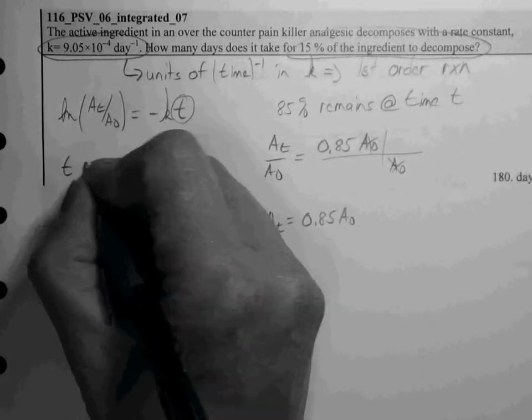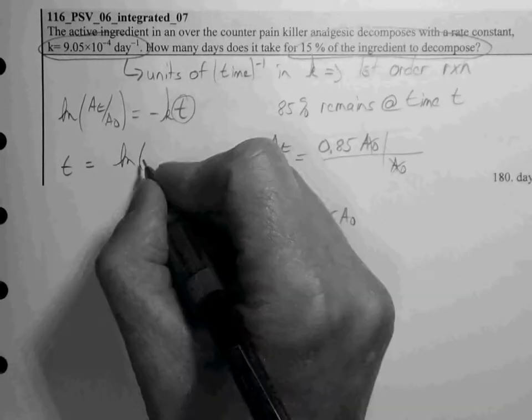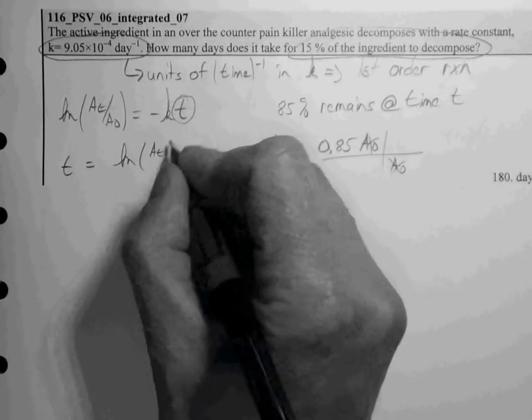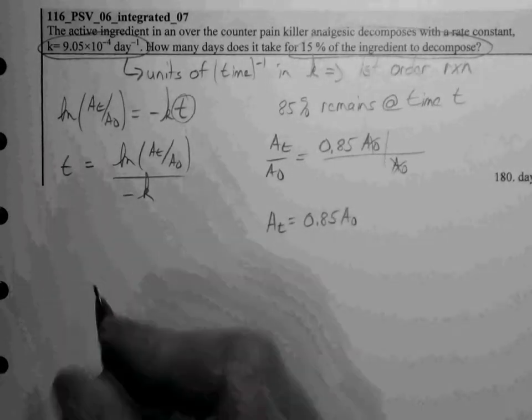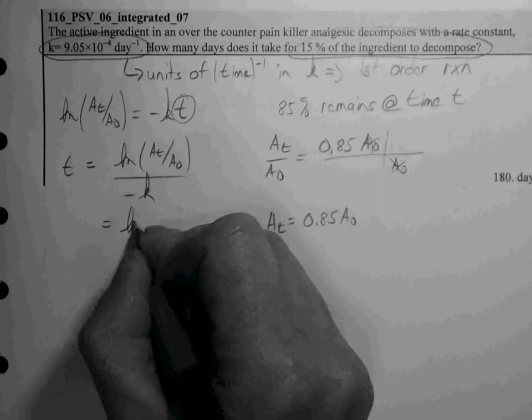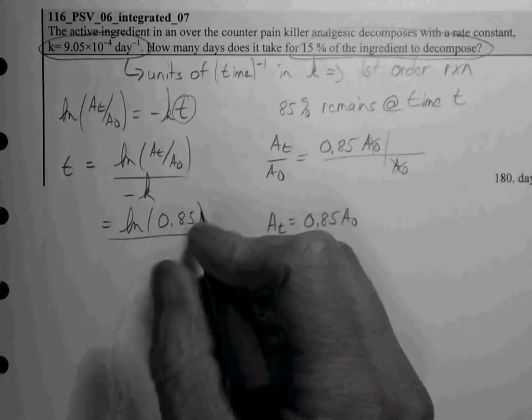So we can solve for T and substitute in our values and K.